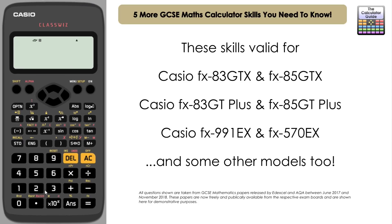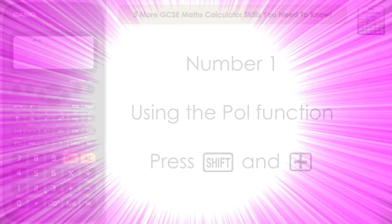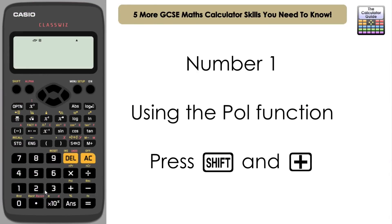So let's get started with the first of the five. The first of the five is looking at using the polar coordinates feature when you have an opposite and an adjacent side. Let's take a look at the question.